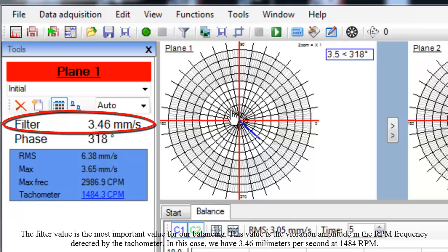The filter value is the most important value for our balancing. This value is the vibration amplitude in the RPM frequency detected by the tachometer. In this case, we have 3.46 mm per second at 1484 RPMs.